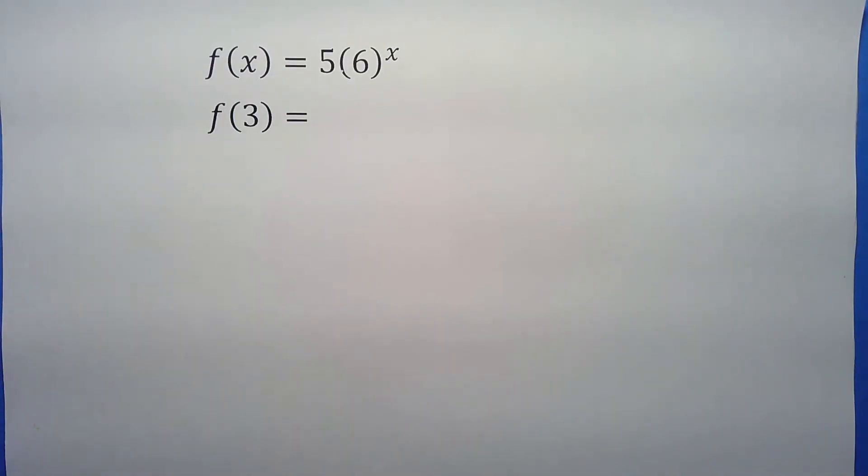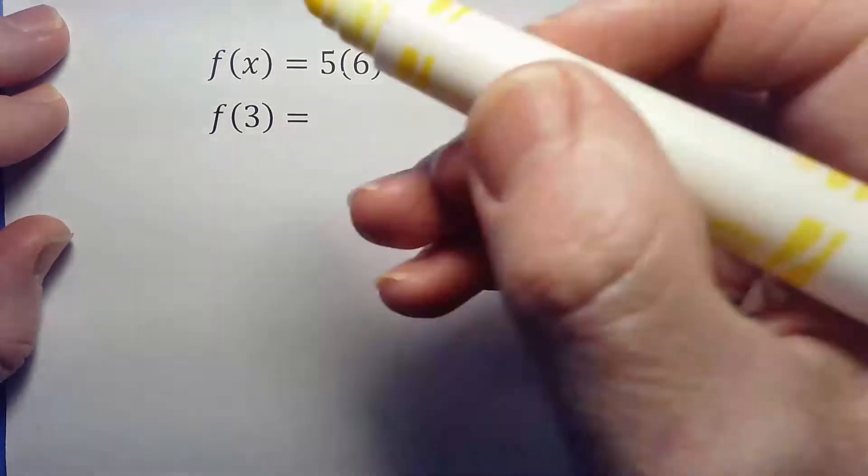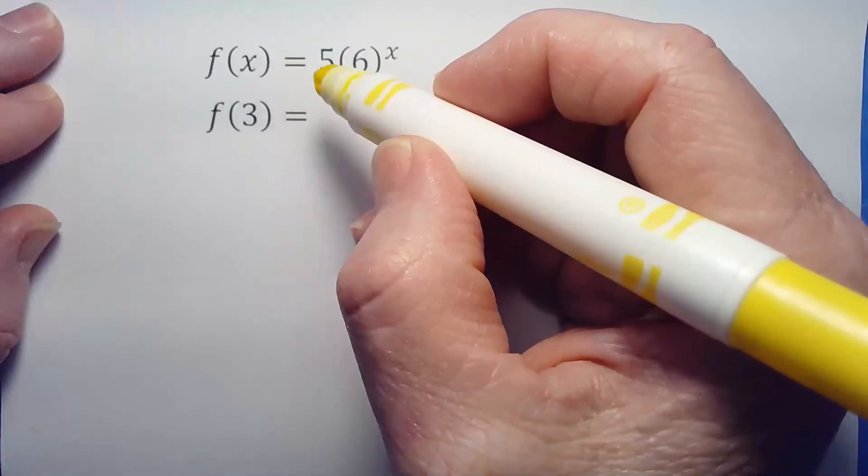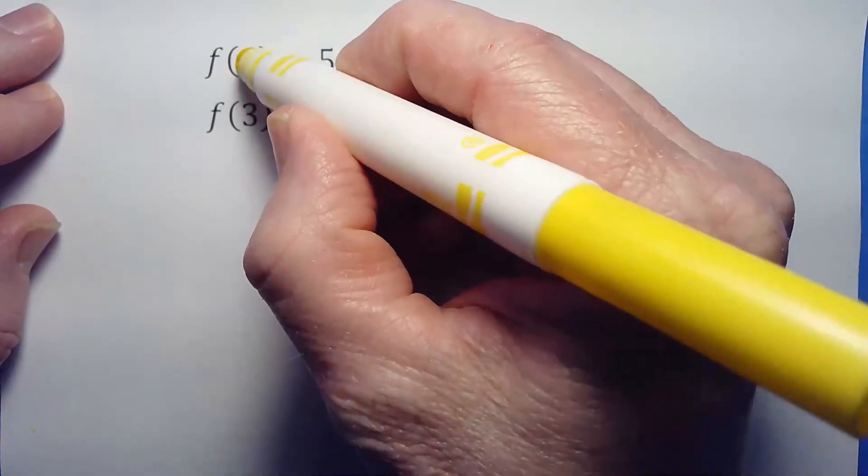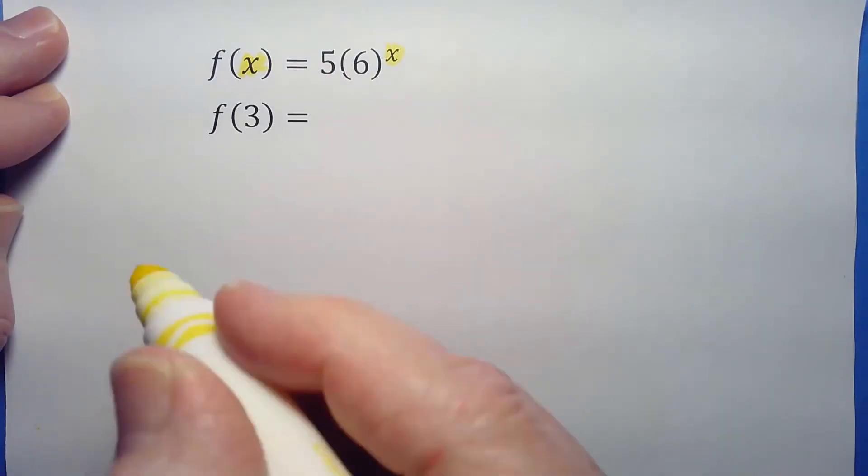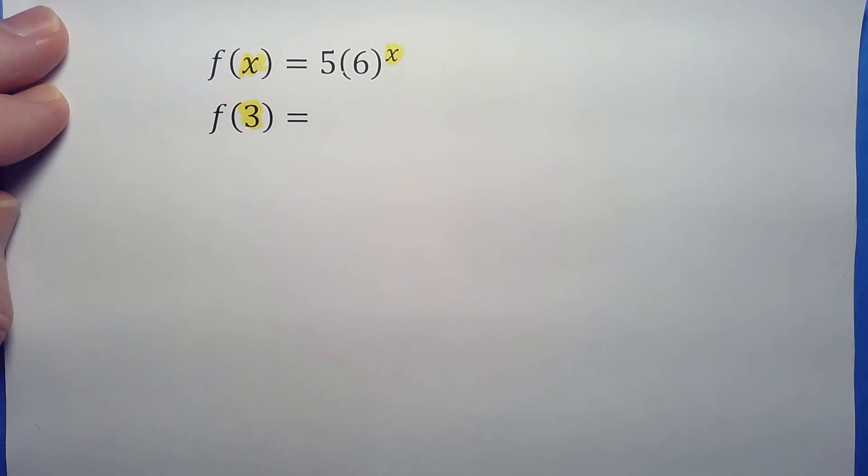Here's our first one. Like I said, f of x—you don't say f times x. It looks kind of like that, but it says f of x. What we're saying is wherever there's an x, you're going to replace it with what's in the parentheses. So we end up rewriting this.